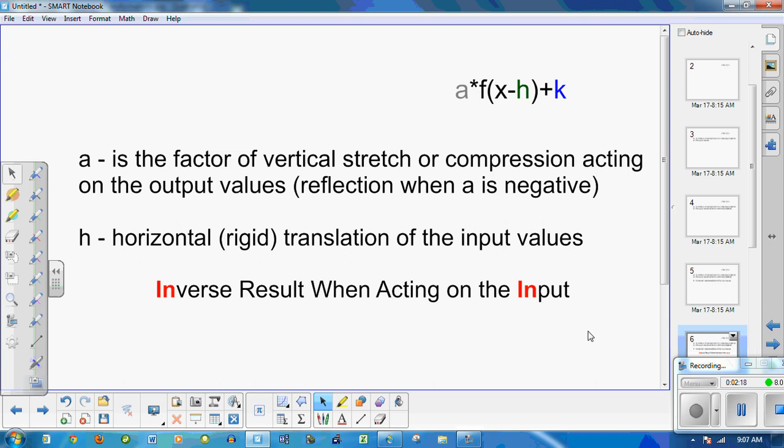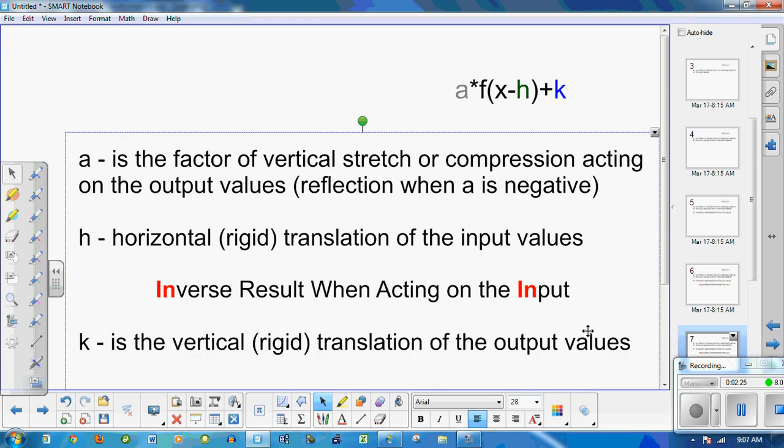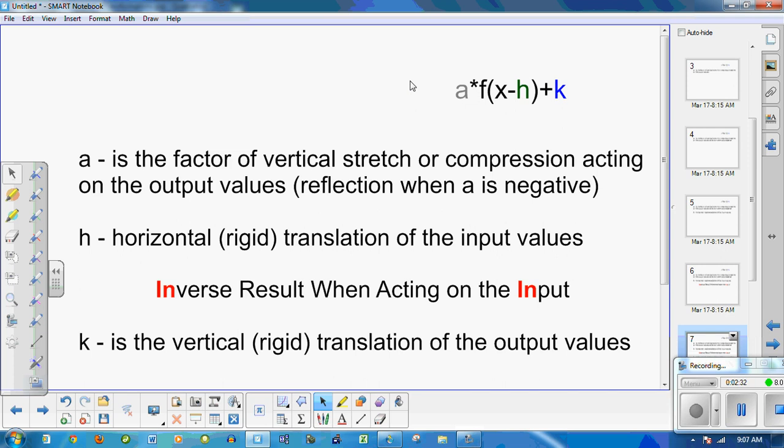Now, the k translation is much simpler. It's much more straightforward. It's kind of termed as what you see is what you get. And k is the vertical rigid translation of the output values. We say what you see is what you get because if it says plus 7, it's actually going to go up 7. If it says minus 6, it's actually going to go down 6.